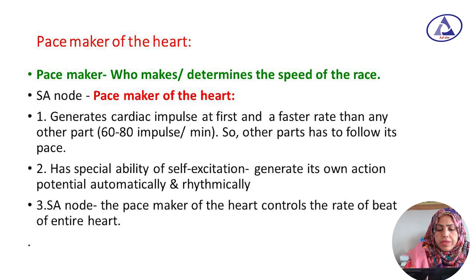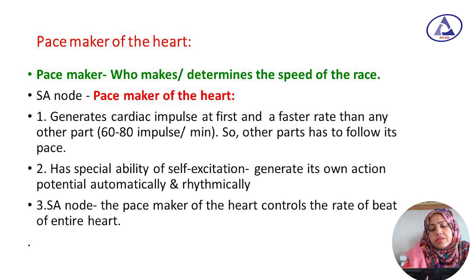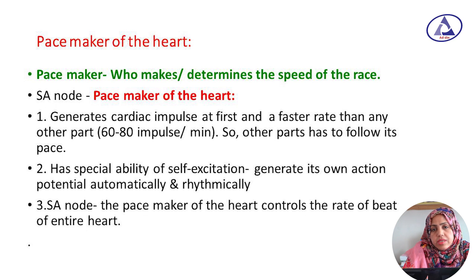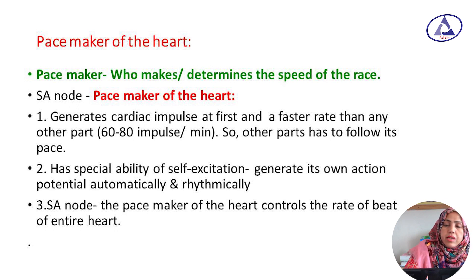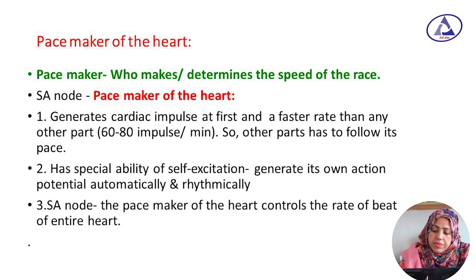Why is the SA node called the pacemaker of the heart? Because it generates cardiac impulses at a faster rate than any other junctional tissue of the heart — 60 to 80 impulses per minute. It maintains the normal cardiac rhythm, and it has a special ability of self-excitation, generating its own action potential automatically and rhythmically. Therefore, the SA node is called the pacemaker of the heart.